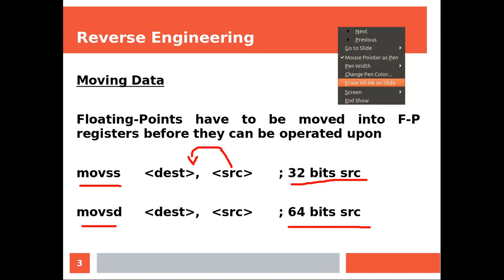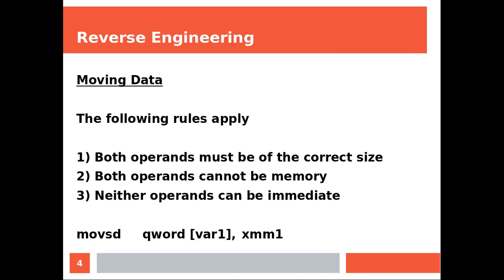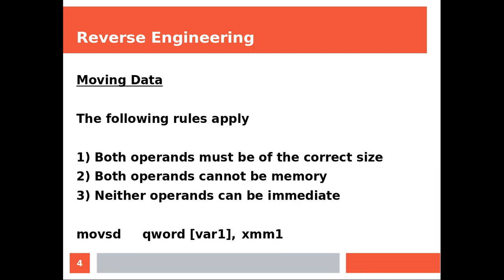The following rules apply: both operands must be of the same size. Both operands cannot be memory — you can achieve memory-to-memory by using multiple instructions, but you cannot do that using just a single instruction. Neither operand can be immediate. For example, XMM1 into a memory label.